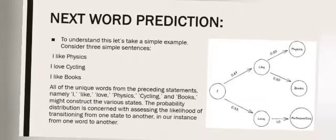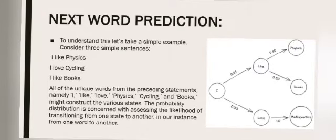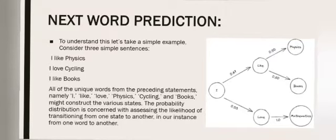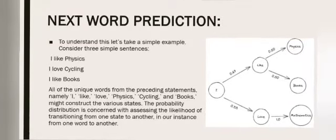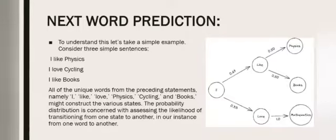The probability distribution is concerned with assessing the likelihood of transitioning from one state to another, in our instance from one word to another. As a result, there is a 100% probability that the first word of the phrase will be I. The same way, this is continued for all the other words in the sentence.